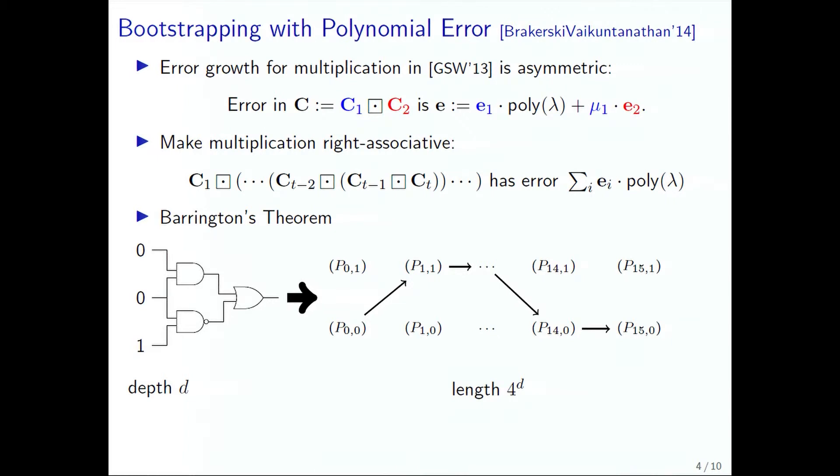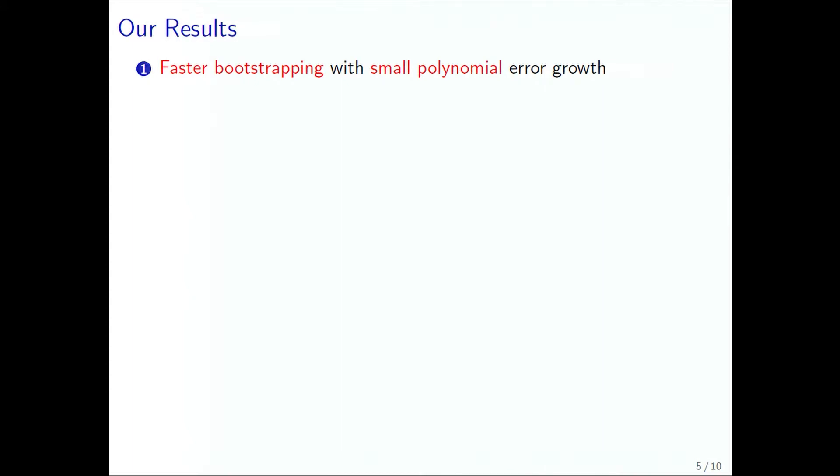So why doesn't this solve everything? There's a big problem. Barrington's transformation is very inefficient. The best analysis of the decryption circuit is 3 log lambda, and it requires lambda to the sixth permutation matrices to be multiplied, inherently requiring at least lambda squared homomorphic operations. So how do we improve on that? We do it faster with small polynomial error growth.